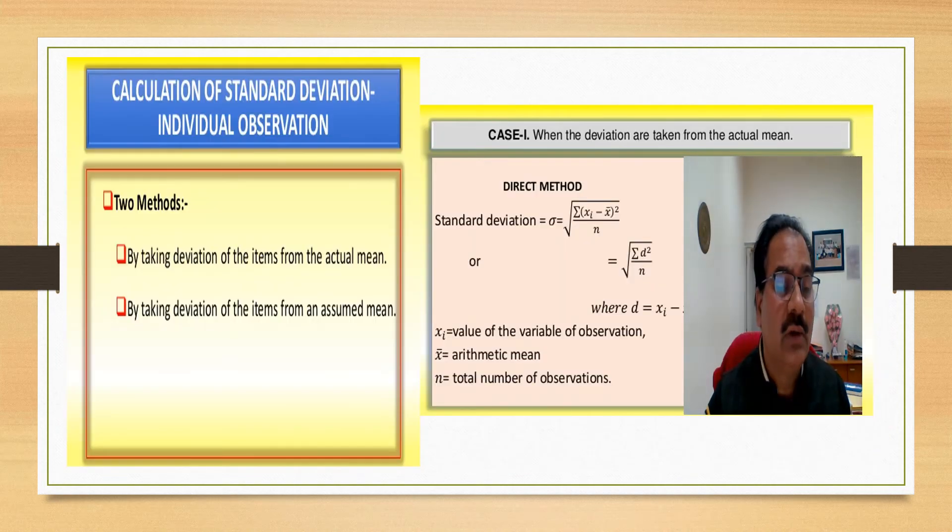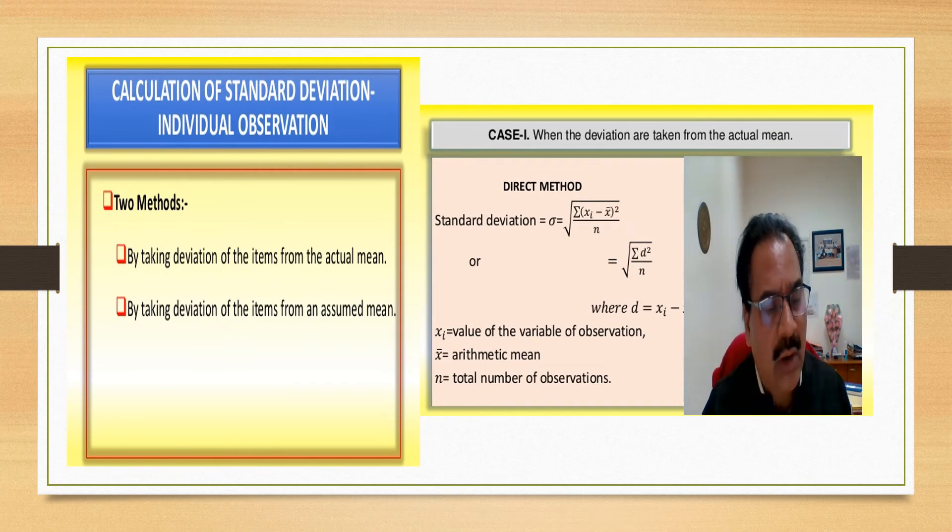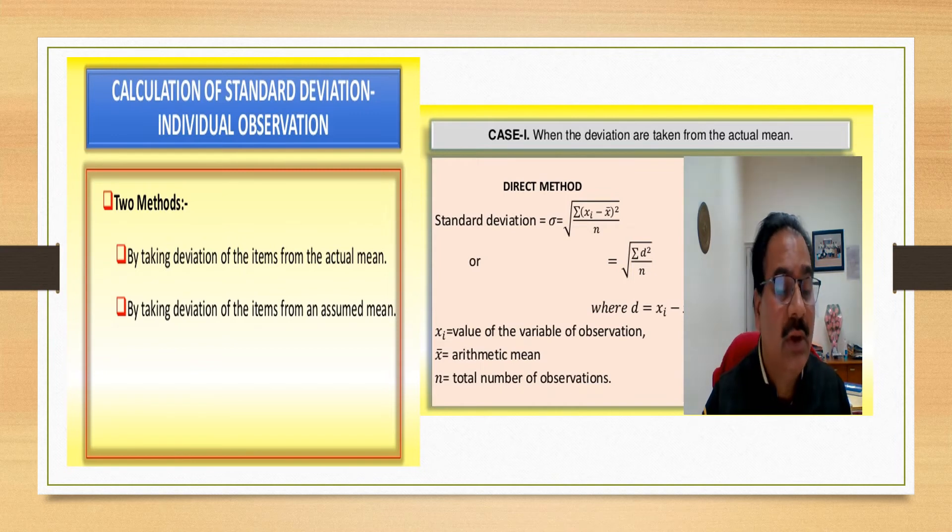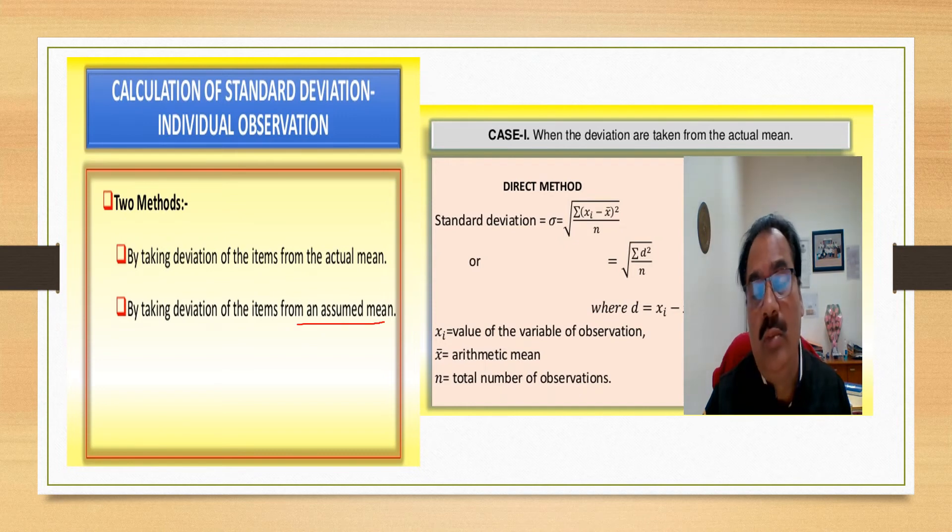Now, just you look at this, how and which kind of method we are going to use. By taking deviation of the items from the actual mean and by taking deviation of the items from an assumed mean.